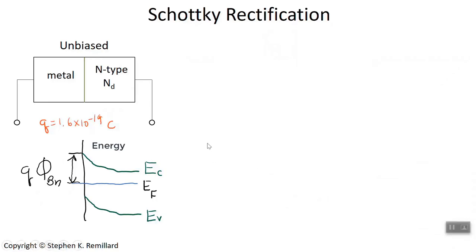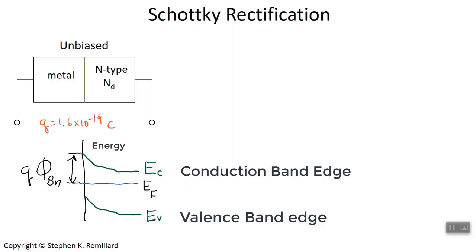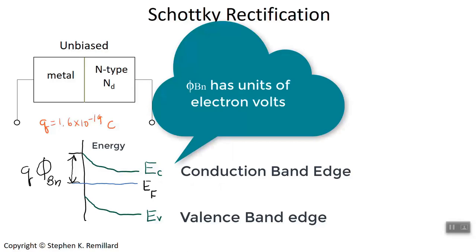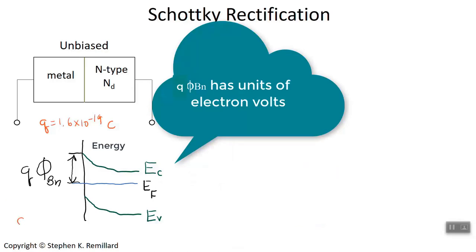The band structure on the semiconductor side includes the valence band edge, E_v, below which holes are mobile, and the conduction band edge, E_c, above which electrons are mobile. The bands bend as the interface is approached, and they bend upward for an n-type material. The conduction band edge meets the interface at q·φ_bn, where q is the electron charge and φ_bn is the Schottky barrier height.